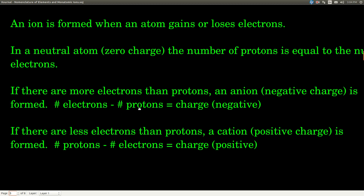So let's say we have six protons and seven electrons - that gives a negative one charge. If you have fewer electrons than protons - if the atom lost electrons - then there are more positive charges than negative charges, and overall it will have a positive charge. We call that a cation. If it has a negative charge, it's called an anion. The size of that positive charge is just protons minus electrons. So if there are six protons and four electrons, six minus four is two - the charge would be positive two.